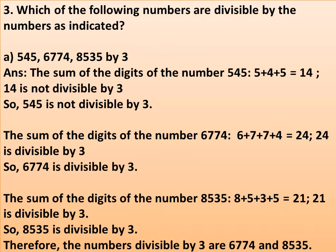The rule is: if the sum of the digits of a number is divisible by 3, then the number is also divisible by 3. The sum of the digits of 545 is 5 + 4 + 5 = 14. Since 14 is not divisible by 3, therefore 545 is not divisible by 3.